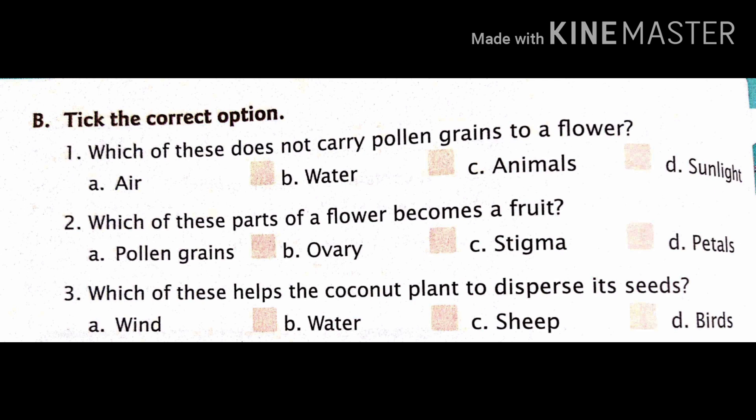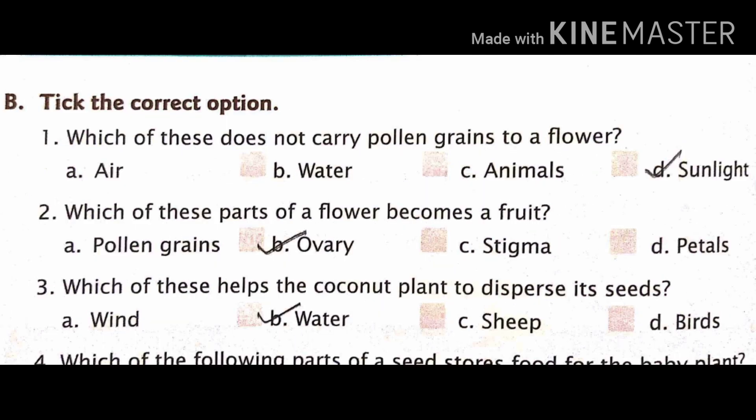Third one, which of these helps the coconut plant to disperse its seeds? Option wind, water, sheep, and birds. And the right answer is yes, water.